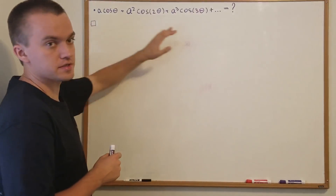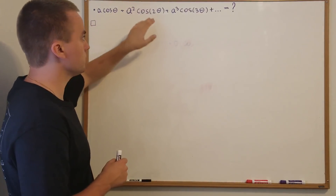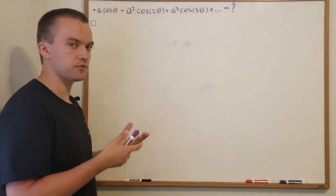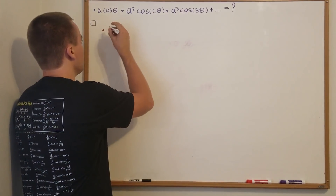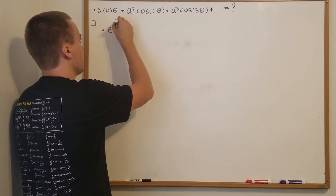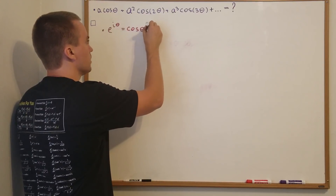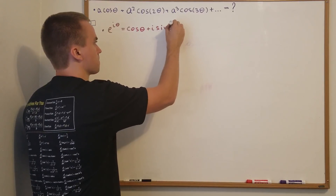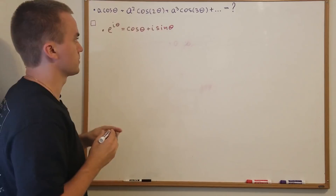We want to find the series and we can see that cosine is involved, so we know in which formula we can find cosine. One of the most famous formulas we're going to use is Euler's formula: e^(iθ) equals cosine θ plus i sine θ. We're going to use this formula to find the series.